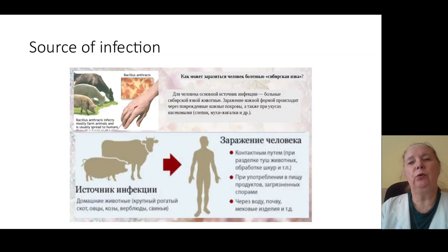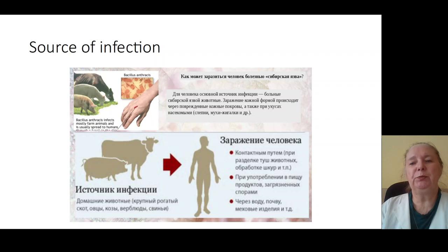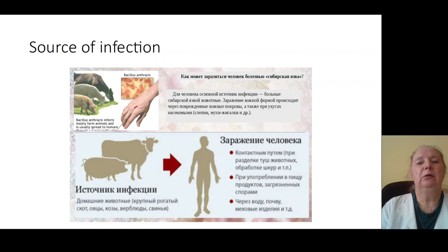Sources of infection include agricultural animals such as cows, pigs, goats, and sheep, as well as contact with infected patients, contact with water, grounds, alimentary products, and milk products which are infected by Bacillus anthracis.